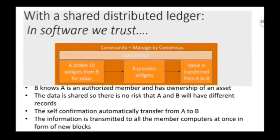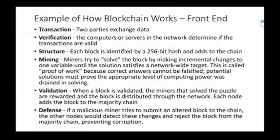An example of how blockchain works: two parties exchange data for a transaction, there's a verification step to determine if the transaction is valid, there's a structure with the hash mechanism that adds to the chain. There's a mining procedure — a proof of work — and it cannot be falsified. You have to use an appropriate level of computing power to solve each block, and once validated, it adds to the chain and the entire network. There's also a crowdsourcing checking system to prevent corruption.